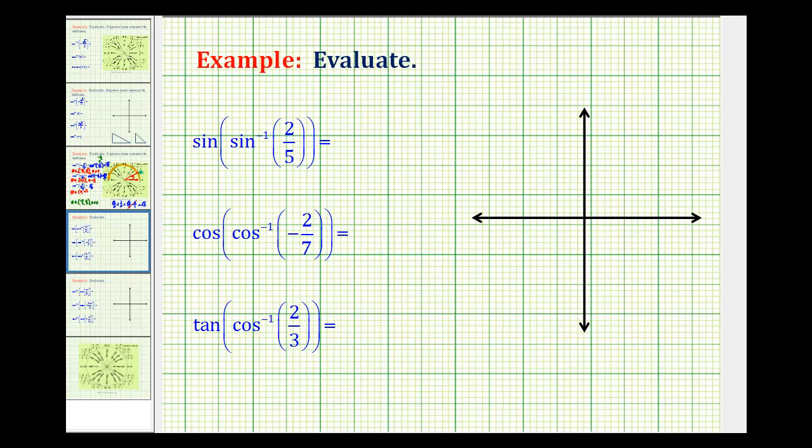In these examples, we want to evaluate the following trig expressions involving trig functions and inverse trig functions. Remember, an inverse trig function returns an angle, so inverse sine two-fifths returns an angle theta, and then we want to take the sine of that angle.